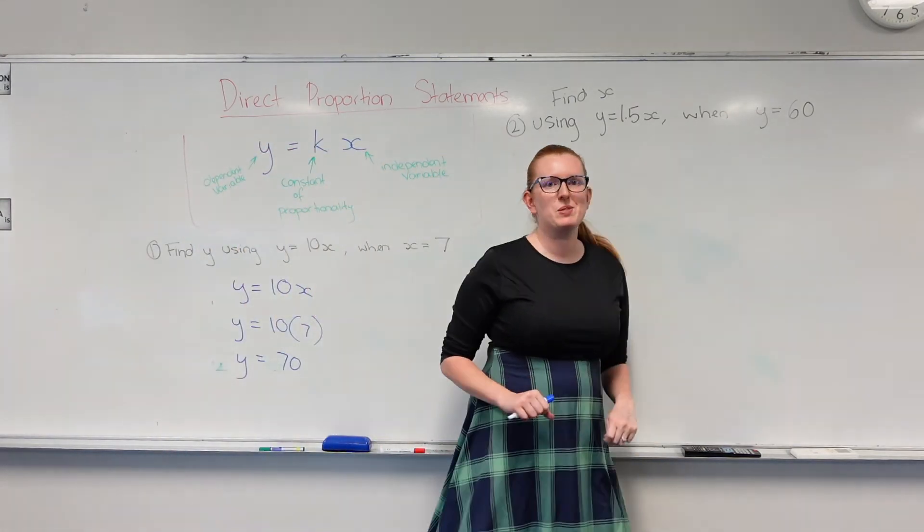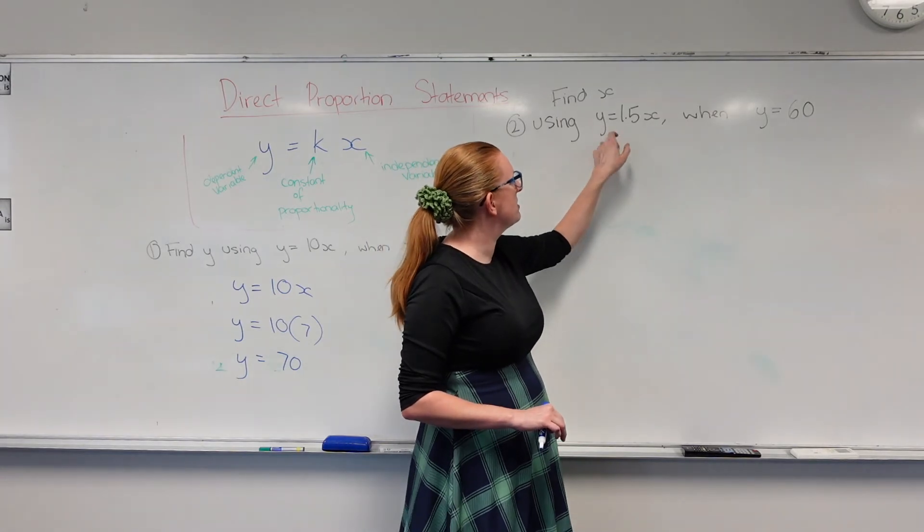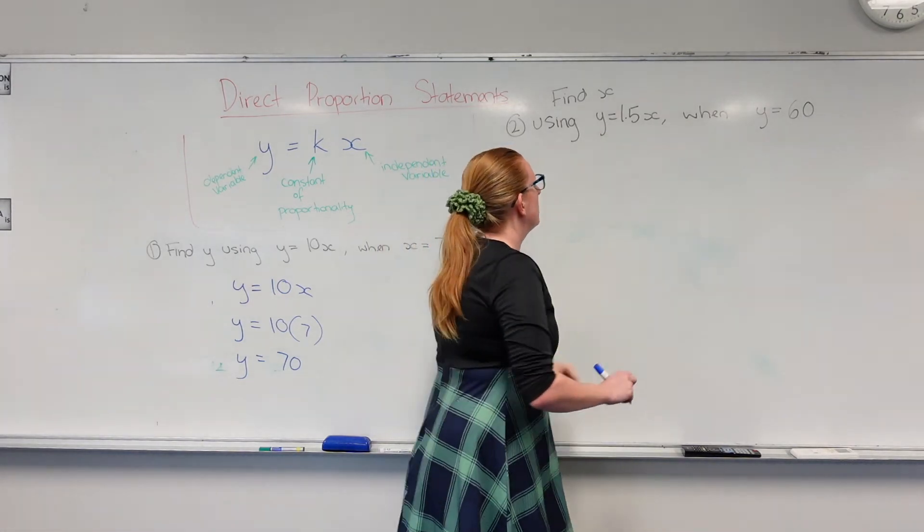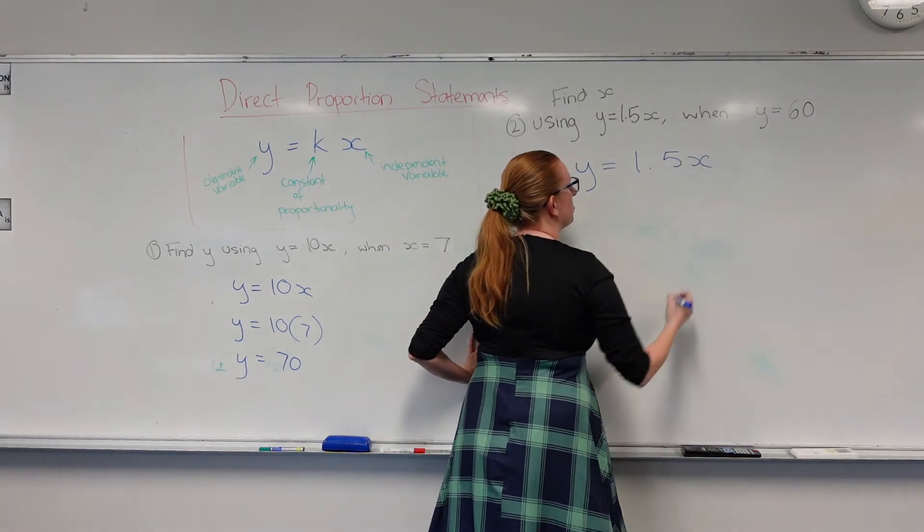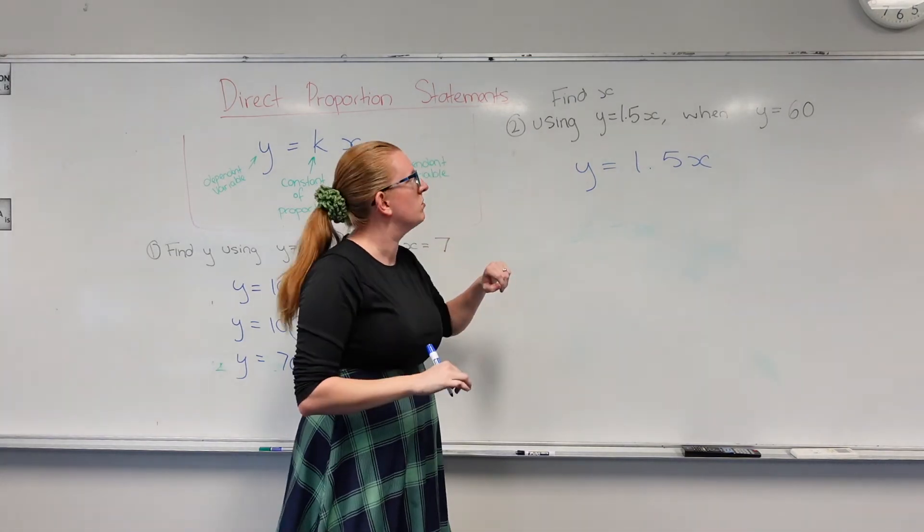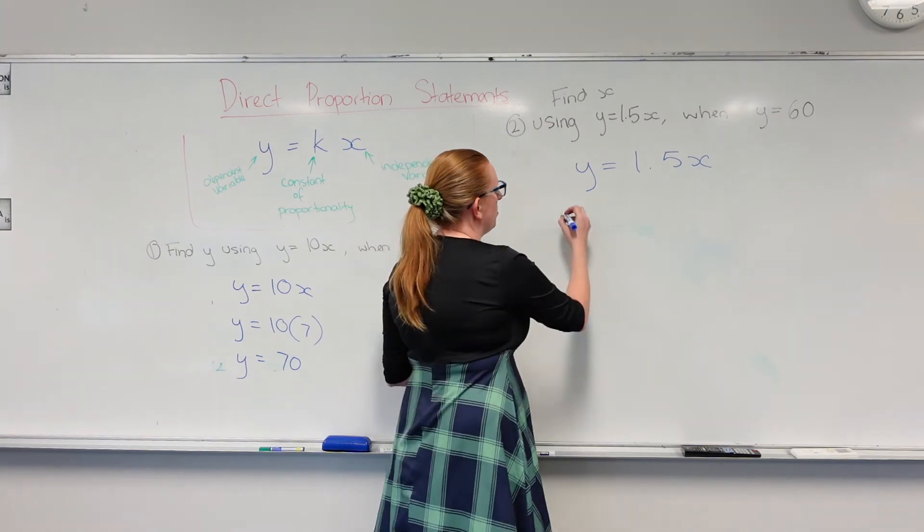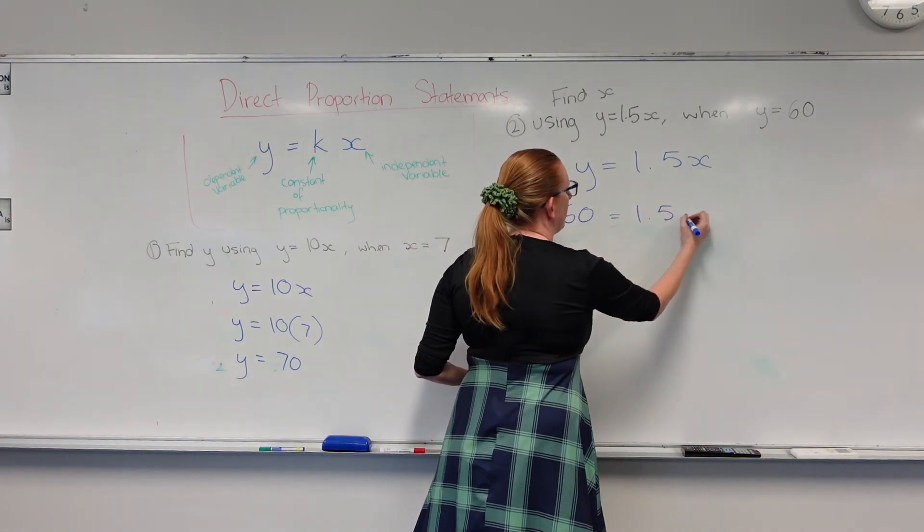Let's have a go at this one. So find x using this direct proportion statement y equals 1.5x when y equals 60. So y equals 1.5x, that's the direct proportion statement that we're given, which is the one we solved before. And now they give us a value for y, so instead of y I'm writing 60 equals 1.5x.